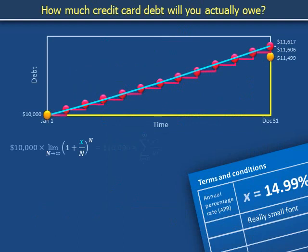Consideration of interest compounded according to schedules with arbitrarily brief, though all the while finite, compounding time periods leads to a limiting value of debt at the end of the year, $10,000 times the sum from k equals 0 to infinity of x to the k over k factorial. This is called compounding continuously. For this credit card agreement, the APR x equals 0.1499.